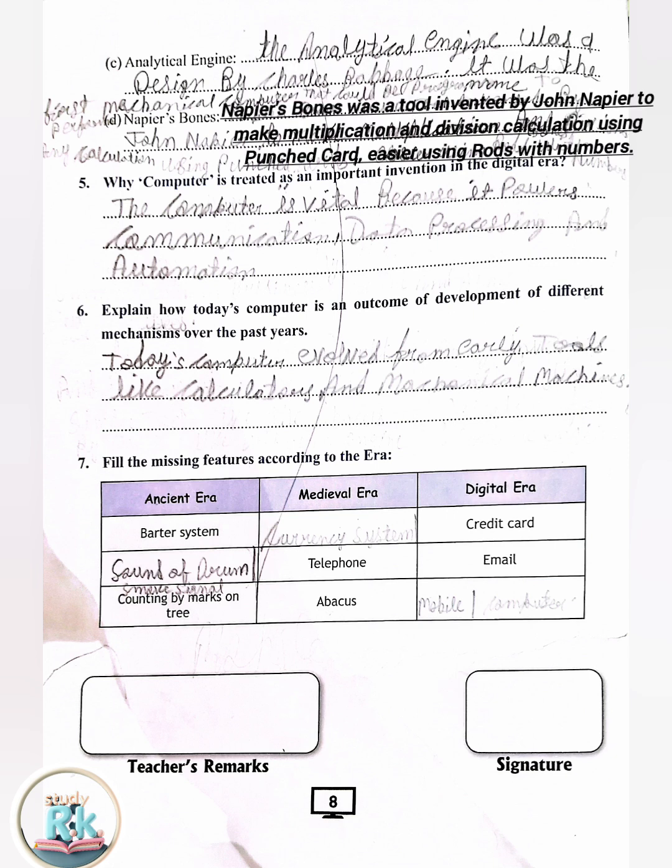D. Napier's Bones. Napier's Bones was a tool invented by John Napier to make multiplication and division calculations easier, using rods with numbers.